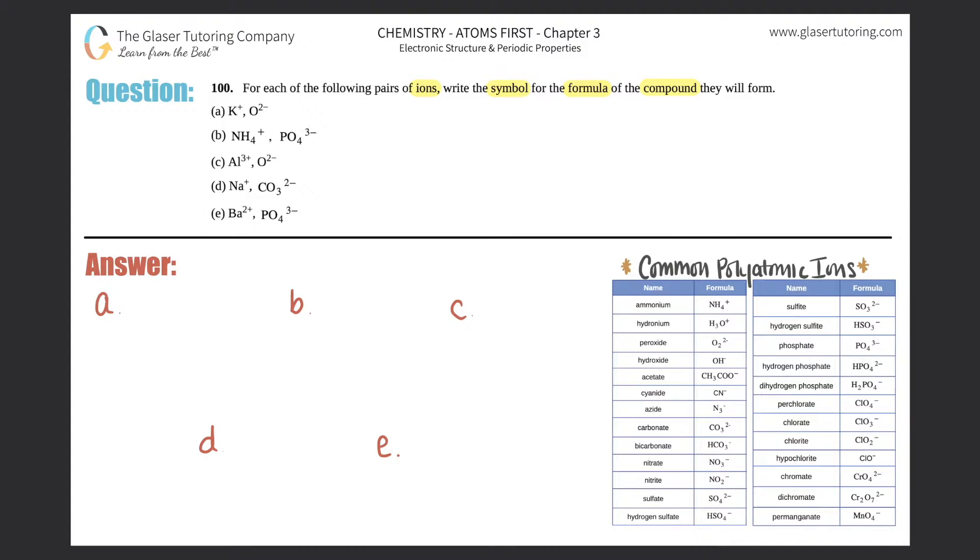Now as I scan through a through e, I notice that for each pairing I'm going to form a compound, you always have a positive and a negative charge. That's for everyone - here's the positive, here's the negative. Whenever you have a positive and negative difference and you're taking two ions that have different charges, this is always going to be ionic compounds.